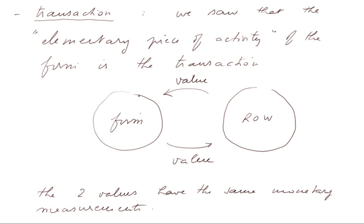A transaction is an exchange between the firm and the rest of the world of values — value coming in from the rest of the world, and value leaving the firm to the rest of the world. These two values have the same monetary measurement. For example, when we buy a van, the van comes from a car dealership into the firm, and the payment goes from the firm to the car dealership — that is, a part of the rest of the world.